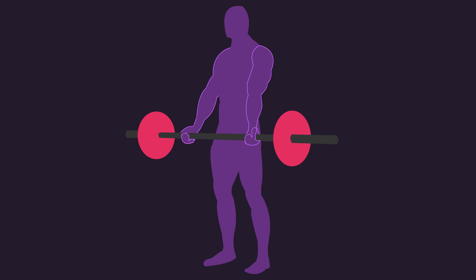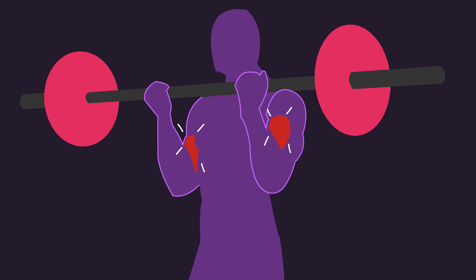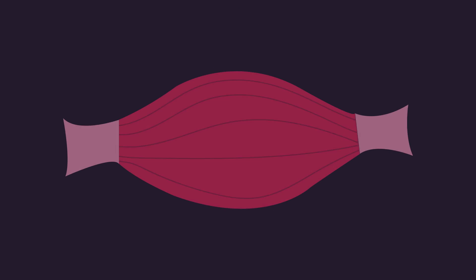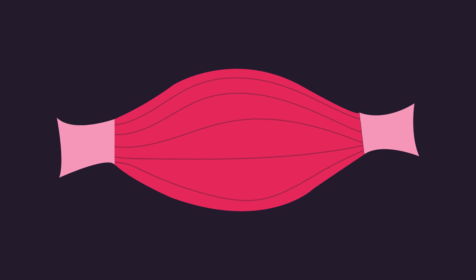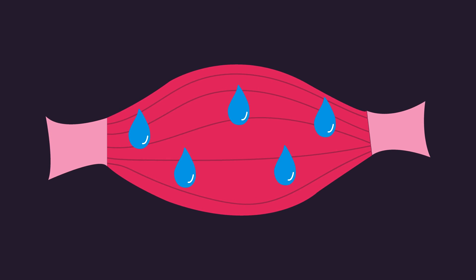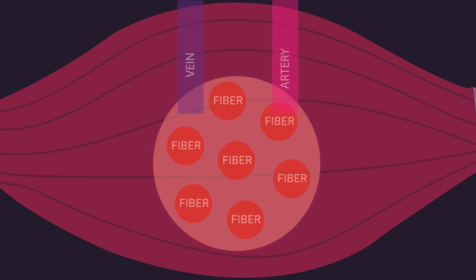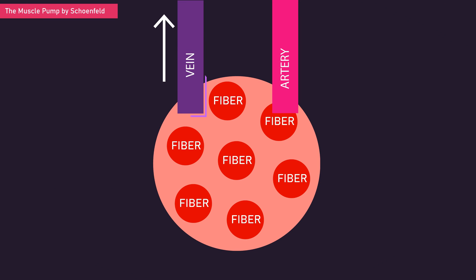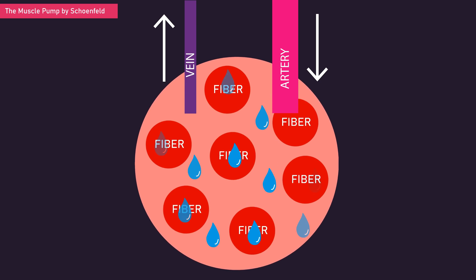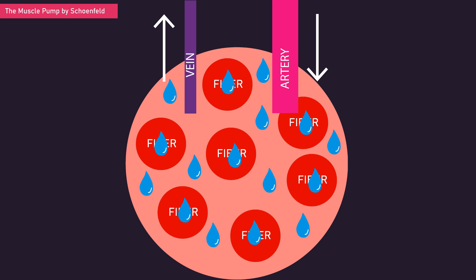Anyone that's resistance trained most likely has felt the pump. Simply, it's where the whole muscle temporarily increases in size due to an accumulation of fluid within it. During muscle contraction, veins carrying blood from the muscle to the heart get compressed, whereas arteries continue to deliver blood to the muscle from the heart, fundamentally producing a buildup of plasma within and around muscle fibers, evoking the pump.